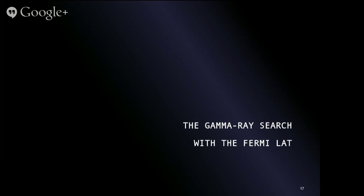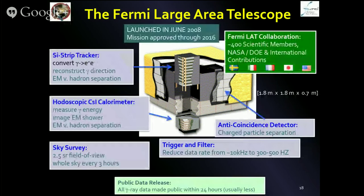If we see a gamma ray signal from these dwarf galaxies, that's considered a smoking gun for exotic physics like dark matter, because there are really no standard astrophysical processes in these dwarf galaxies expected to give gamma rays. We can look for gamma rays with the Fermi Large Area Telescope, which has been on board the Fermi Gamma Ray Space Telescope for over six years. This has been a beautiful instrument that opened a new window on the gamma ray sky. It's also wonderful for following up on new dwarf candidates because Fermi is a survey instrument — it has already been observing these objects, we just didn't know where to look in the data before. Fermi sees the entire sky every three hours in standard survey mode. The Fermi LAT collaboration is a team of about 400 international scientific members and all of our data is public.